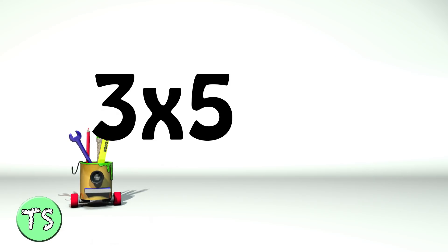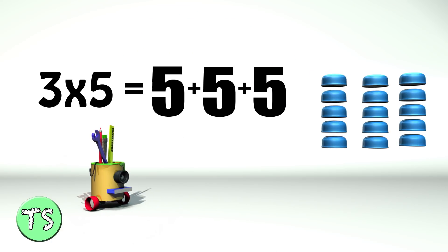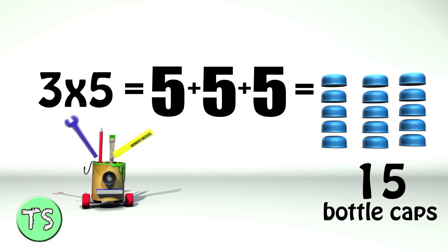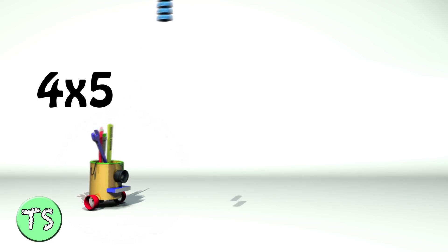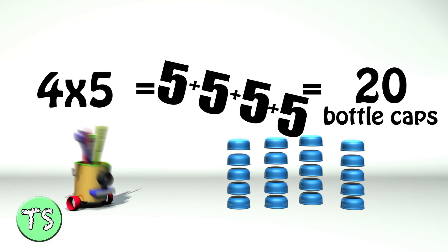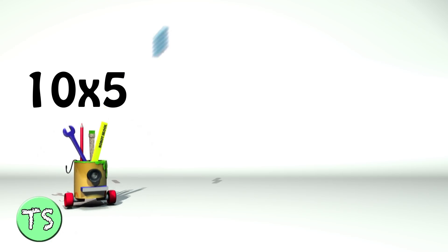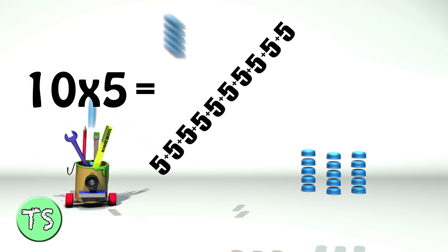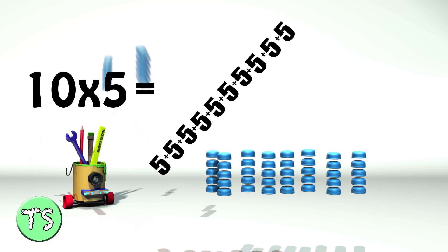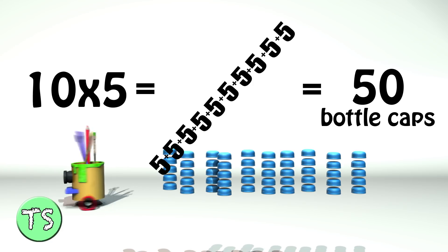3 times 5 — we write 3x5 — is 5 plus 5 plus 5. It equals 15 bottle caps. 4 times 5 equals 5 plus 5 plus 5 plus 5, which equals 20 bottle caps. 10 times 5 equals 50 bottle caps.